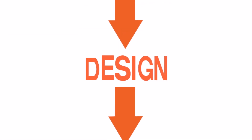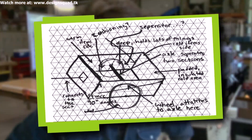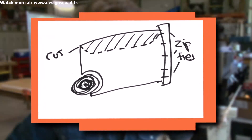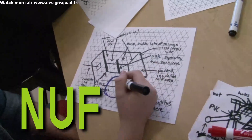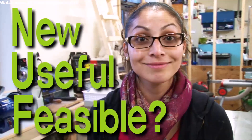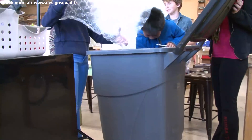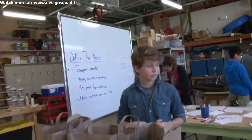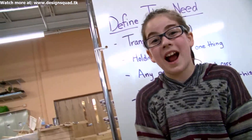The next step is to design. Looks like we have two ideas: one is a trailer made out of PVC, and two is a repurposed trash can. Designing involves sketching out your ideas, narrowing down your solutions, and giving it the NUFF test — is it new, useful, and feasible? It's new because I don't think anyone's ever made a trailer out of a repurposed trash can. It's useful because you can carry groceries in it. And it's feasible because we're actually building it.